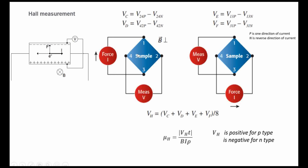The Hall voltage VH is determined through multiple measurements. VC is V₂₄ with current from 1 to 3, and V₂₄ with current reversed (3 to 1). VD is V₄₂ with two current directions. Similarly VE and VF are obtained by reversing voltage and current directions. VH is the average of all eight readings. The sign of VH (positive or negative) tells us whether the sample is p-type or n-type.